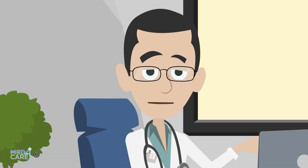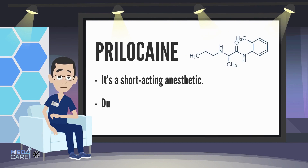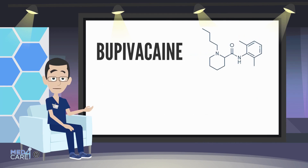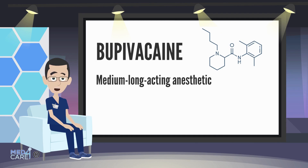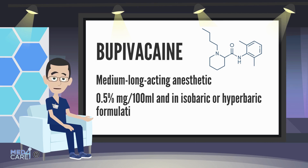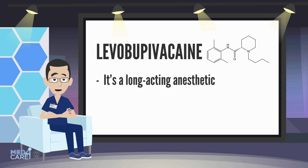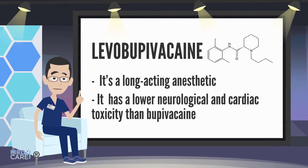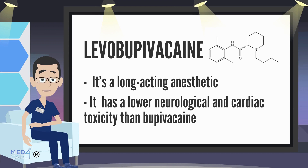These drugs can be administered individually or in combination, especially if a longer duration of anesthesia is desired. Prilocaine is a short-acting anesthetic, more suitable for very short and not excessively painful operations where rapid recovery is required, even for same-day discharge. Bupivacaine is a medium-to-long-acting anesthetic, generally used at a concentration of 0.5% mg/100 ml in isobaric or hyperbaric formulations. Levobupivacaine is a long-acting anesthetic, typically used at 0.5% or 0.75% mg/100 ml, and has lower neurological and cardiac toxicity than bupivacaine, allowing use at higher total concentrations without significant side effects.